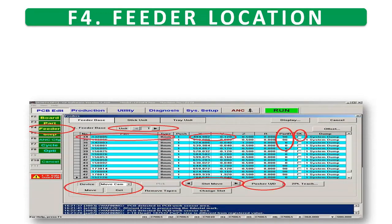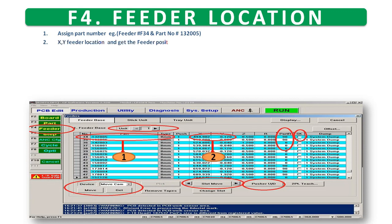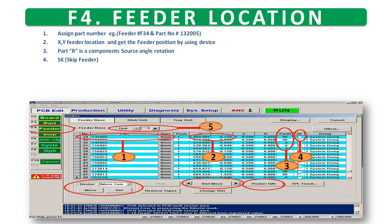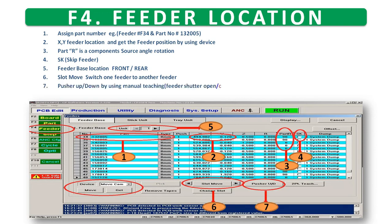F4 feeder location. One: assigned part number. Two: X, Y feeder location — get the feeder position by using device. Three: part R is the component's source angle rotation. Four: S, K — skip feeder. Five: feeder base location front/rear. Sixth: slot move — switch one feeder to another feeder. Seven: pusher up/down by using manual teaching, feeder shutter open/close. Eight: manual teaching position X, Y in feeder component picking location.